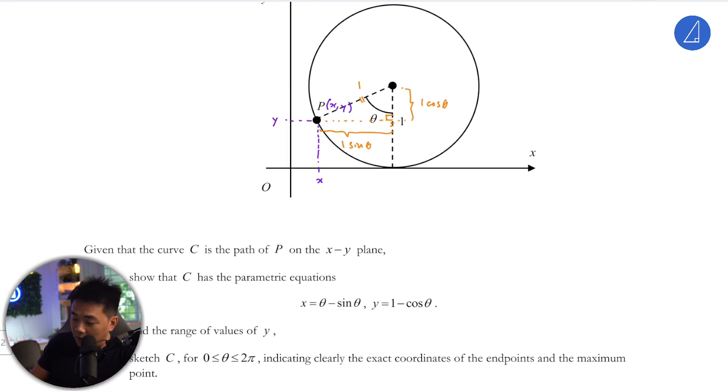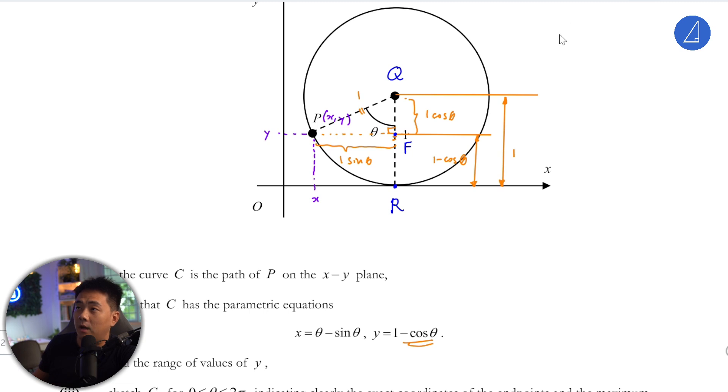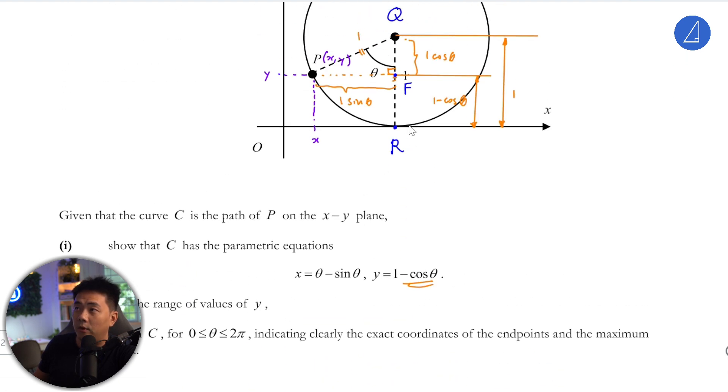So I think getting the y shouldn't be an issue because what happens here is this one over here, this is 1 unit. Then this over here is actually just 1 - cos θ. So you get straight away that y is just 1 - cos θ. The one which is not so straightforward is actually the x coordinate. But before that, let me just label everything. I label this as Q and R. Q being the center of the wheel, and R be the point of contact to the floor. Then F be the foot of the perpendicular of P to QR.